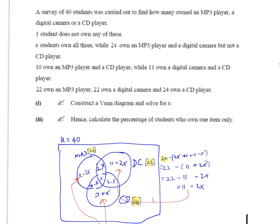We need to start off by identifying what the universe is. The universe is the total number of students who are surveyed, which is 40, so we put that up here. Generally, I think the easiest way to do this is to start with the middle element here, the students who had all three.